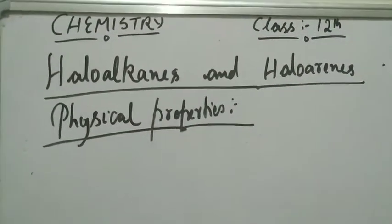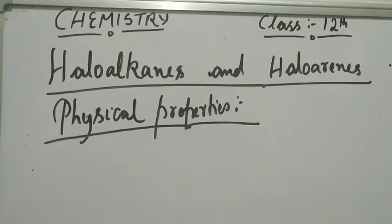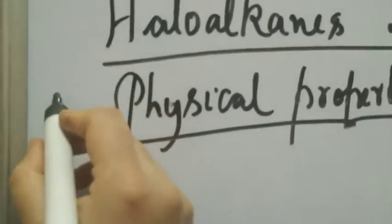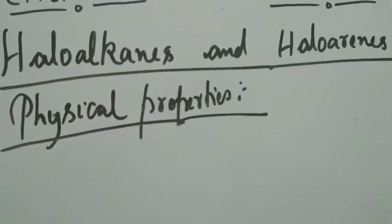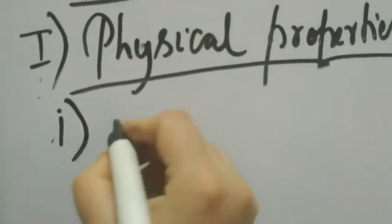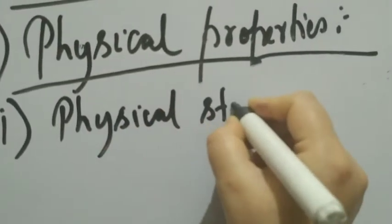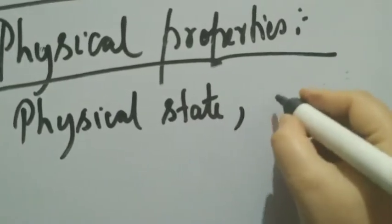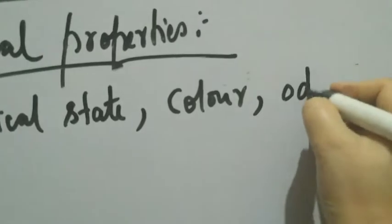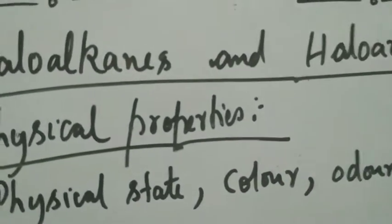We are studying the chapter based on haloalkanes and haloarenes. The next topic is their physical and chemical properties. We'll take up the first section: the physical properties of haloalkanes and haloarenes. The first physical property we'll talk about is their physical state — do they exist as solids, liquids, or gases? Then we'll look at their color, and whether they have an odor.